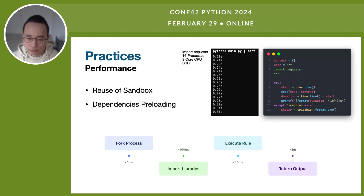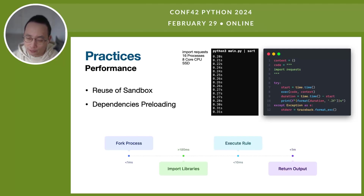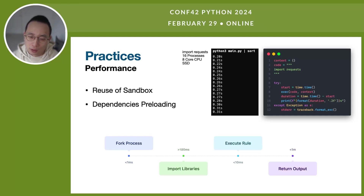The bottleneck is disk I/O when most rules use similar Python packages. In an experiment shown on the slides, we reproduced this situation. We used a rule which only imports the `requests` package. When having 16 processes on a machine, the execution time increased to 300 milliseconds. Usually, executing a rule only costs several milliseconds, so the huge time consumption in the preparing stage is obviously unacceptable.